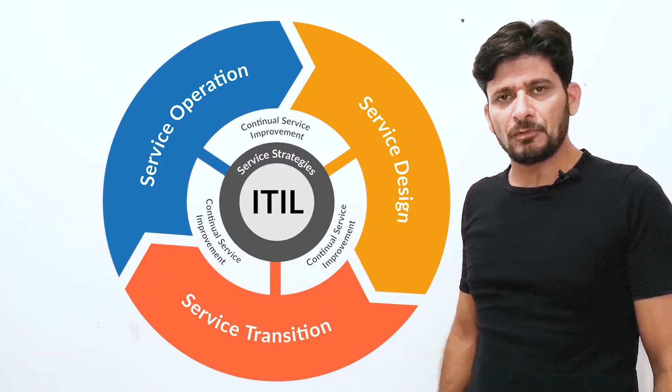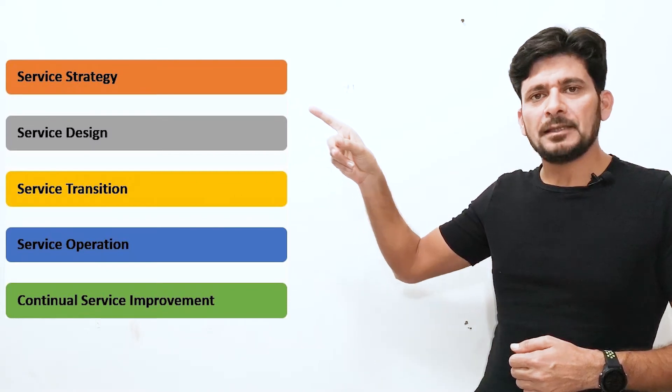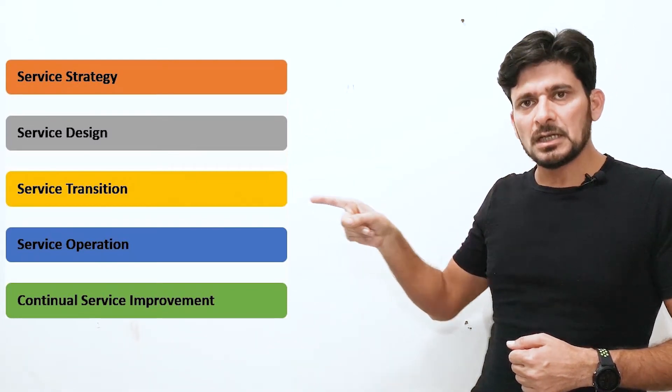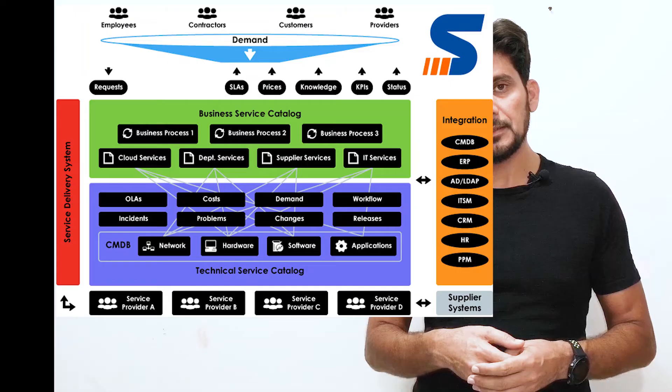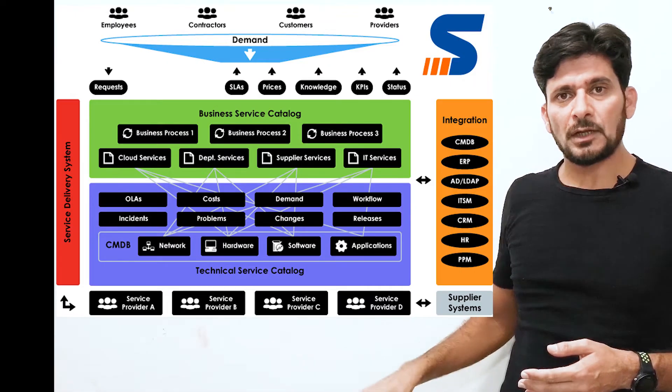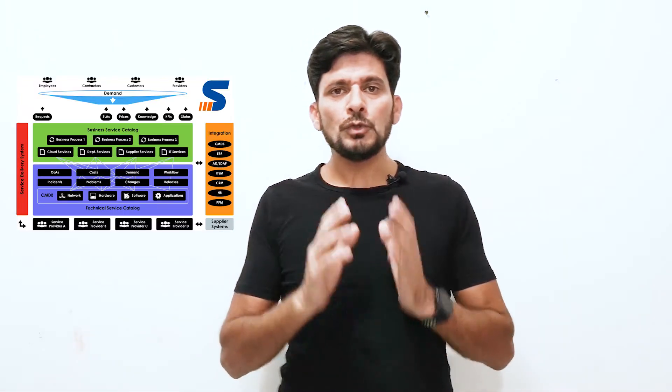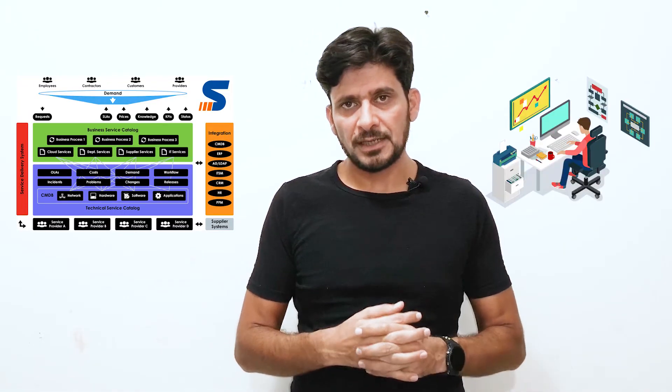Using ITIL best practices we can align IT services with the needs of business to make the business successful. There are five major components in the ITIL framework: service strategy, service design, service transition, service operation, and continuous service improvement. To implement these practices in your organization, take this as a project. Based on the service strategy you can define which kind of services you have to provide to your clients. There is an example of a service catalog — once you have designed your service catalog you can put it into your IT service desk.